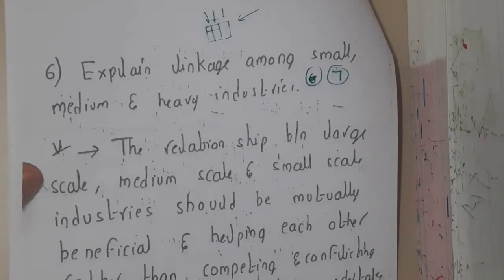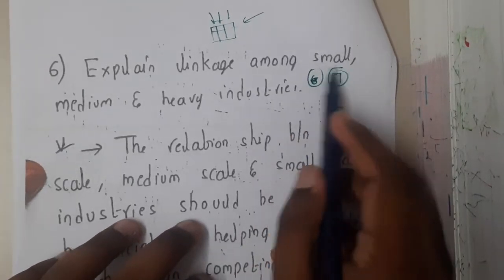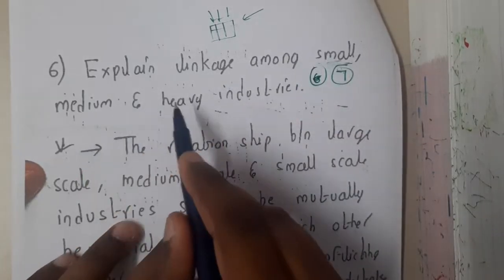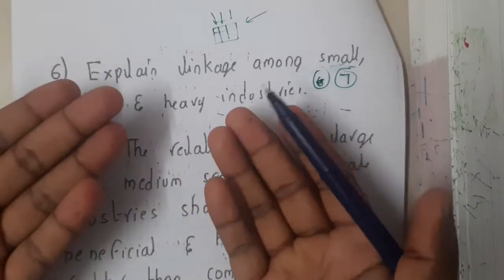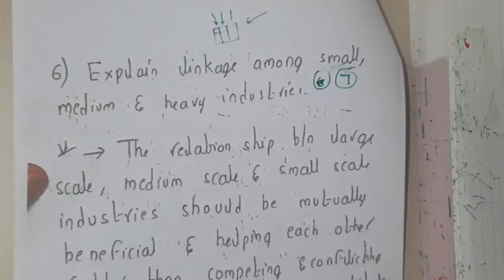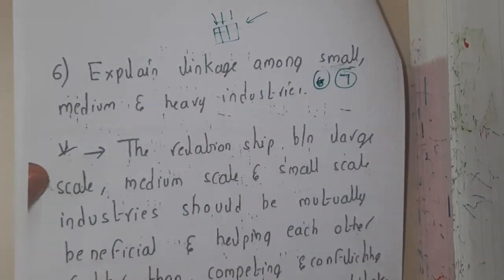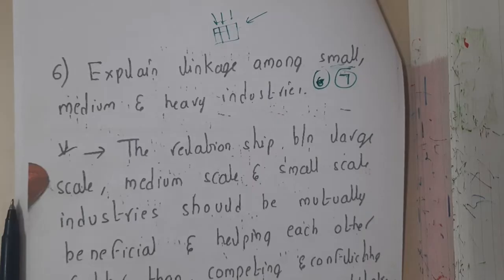In this lecture, let us go through the linkage between small, medium, and large scale industries. Basically, some things could be created by small scale industries and used by other industries, and some products created by large scale industries could be used by other industries. The linkage between them should be proper — they should always be ready to share their products, needs, and work. The relationship between large, medium, and small scale industries should be mutually beneficial.